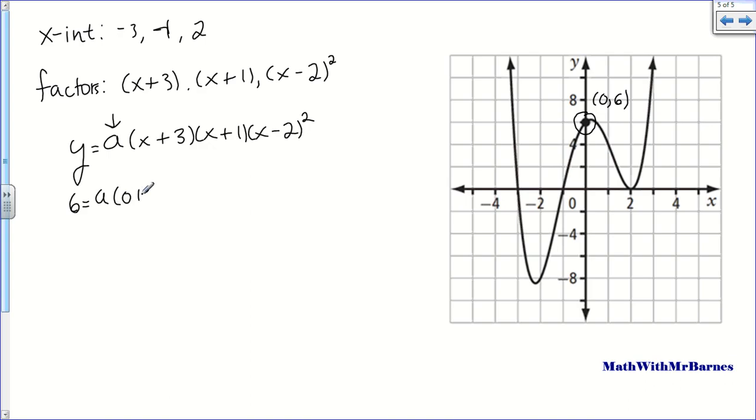So, I have 0 plus 3, 0 plus 1, and then 0 minus 2 squared. So, what I have is 6 is equal to a. I'm going to have 3, 1, and then negative 2 squared.